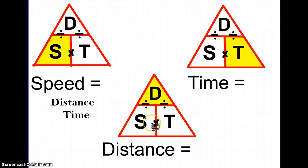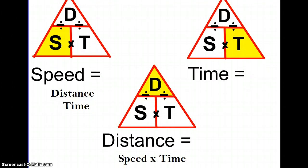If you want to find the distance that an object went, cover up the D. So what we have left over is speed times time. The formula for distance is speed times time.